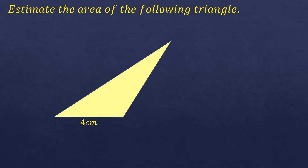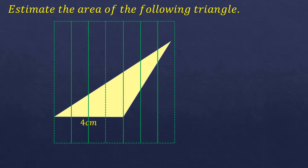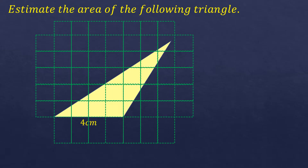Since the base is 4 centimeters, we're going to divide it into 4 parts, meaning it's 1 centimeter each part. And then we will extend our grid so that it will cover the whole triangle, and do the same in the horizontal direction, with the same size as the vertical.